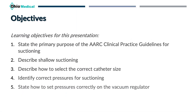Now let's briefly cover our objectives for this presentation. We're going to state the primary purpose of the American Association for Respiratory Care's clinical practice guidelines for suctioning. We're going to describe shallow suctioning and how to select the correct catheter size. We're also going to identify the correct pressures for suctioning and state how to set pressures correctly on the vacuum regulator.